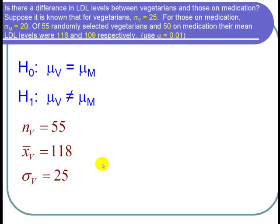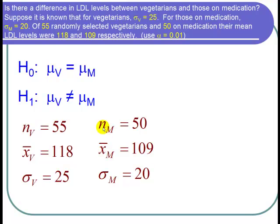For those on medication, the sample size was 50. X bar for those on medication was 109. And sigma sub m, the standard deviation for those on medication, was 20.